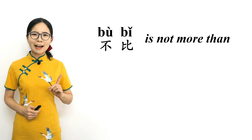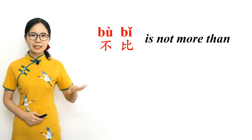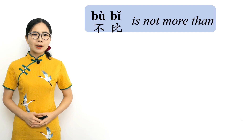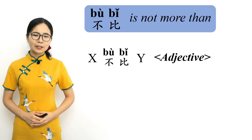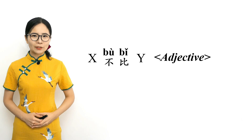不比, 不比. 不比 means 'is not more than.' Using the structure X 不比 Y adjective, you can say 'X is not more adjective than Y.' Let's look at some examples.